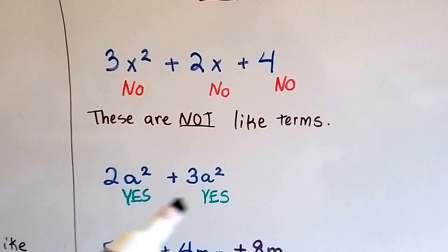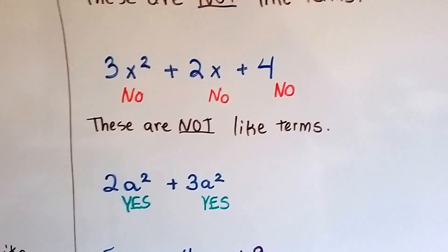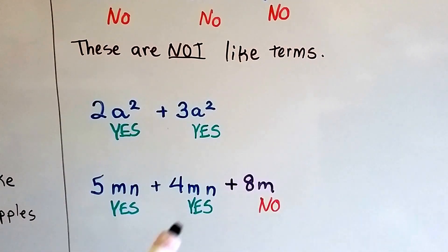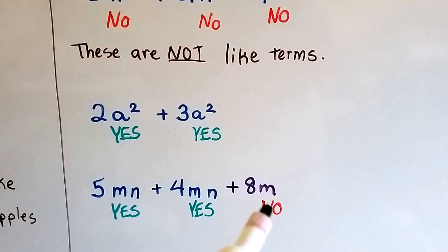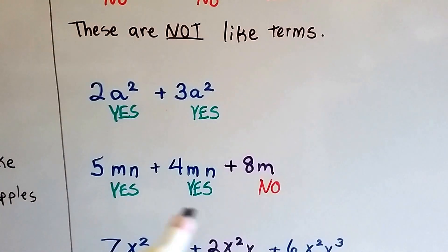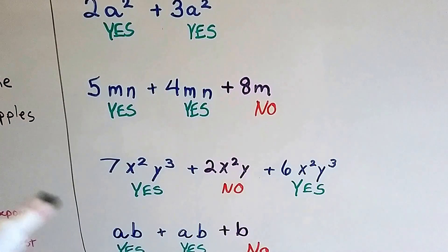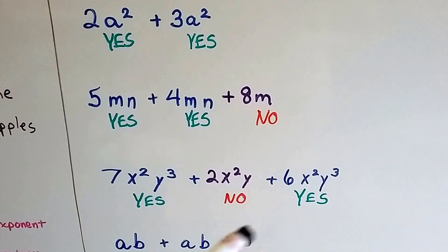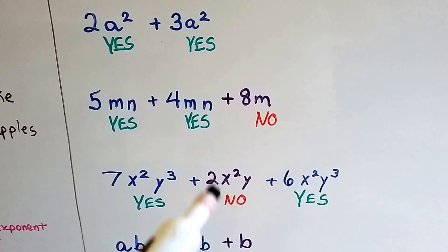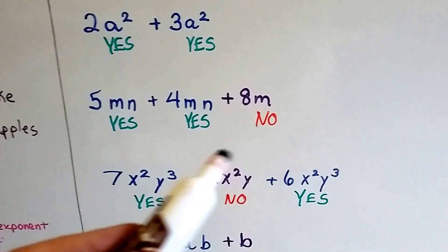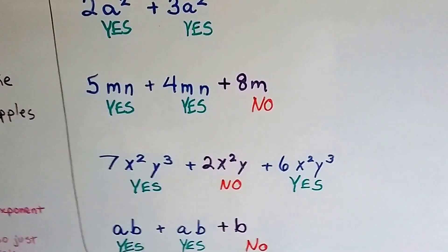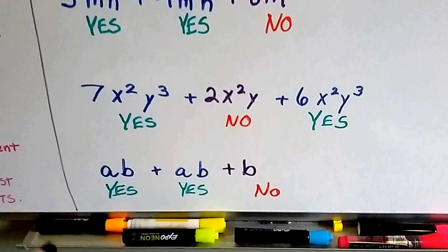Now look at this one: the coefficients are different numbers, but the variables and the exponents are identical — yes and yes — so these can be combined together. And look at this: we've got 5mn and 4mn — they're identical. But this 8m — nope, he's not the same. We would combine the 5mn and 4mn as one term and then put plus 8m at the end. We have 7x squared y cubed and 6x squared y cubed, but this is just 2x squared y — there's no cube there. Because that little 3 exponent is missing, the whole term is not alike. These two can be combined, and then we put plus x squared y at the end, after we combine these as 13, because 7 plus 6 is 13.